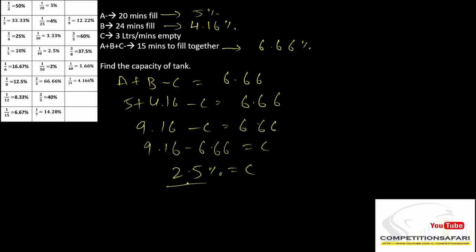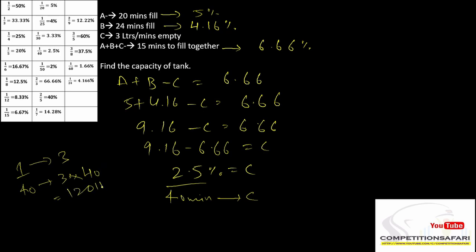So the moment I see 2.5%, I'll know that this value corresponds to 1/40, which means in 40 minutes C can empty the tank completely. This also helps us find the capacity of the tank: in 1 minute, C is emptying 3 liters, so in 40 minutes it will empty 3 × 40 = 120 liters. So 120 liters is the capacity of our tank. All this is ratios and percentages, nothing more, and basic calculations which you can do in your mind. It's very time-saving from the perspective of your examinations.